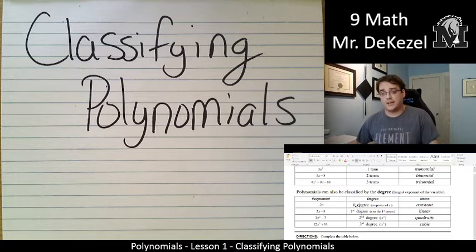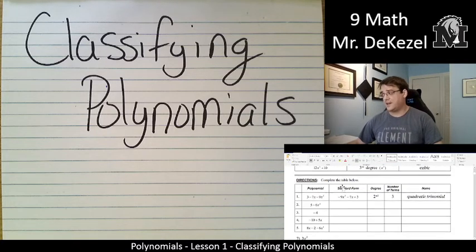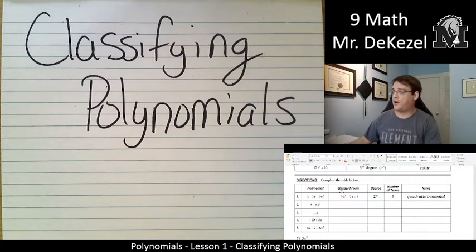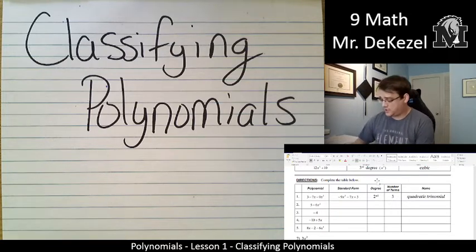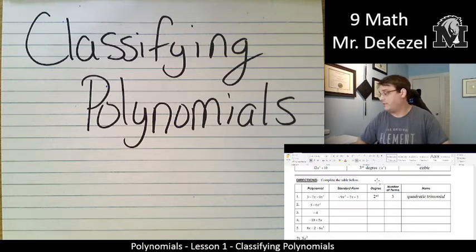And after that, we just say fourth degree, fifth degree, depending on the highest exponent. I think the easiest way is often to just practice. So, let's get going. We're going to complete the table. Writing it in standard form just means writing it from left to right with the highest exponent first. The first one is done, so let's just do number 2.